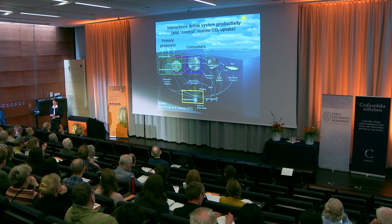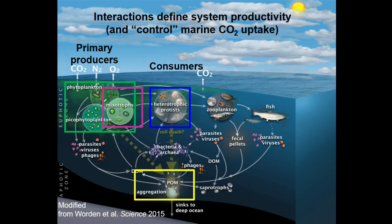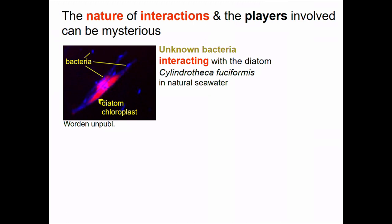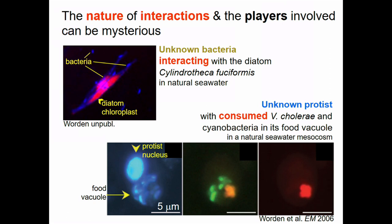Because Penny brought it up, I squeezed in a little bit on marine snow. The nature of interactions and the players involved can really be mysterious in the field. Here's a diatom with bacterial cells — we know who the diatom is, but we don't know who the bacteria are, in natural seawater. In a mesocosm study using labeled bacteria and natural Synechococcus, here's a protist. You can see its nucleus and food vacuole, so we can say this protist ate these cells, but we can't say who the protist is.